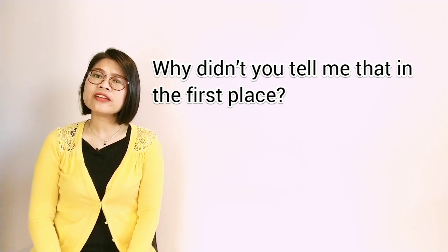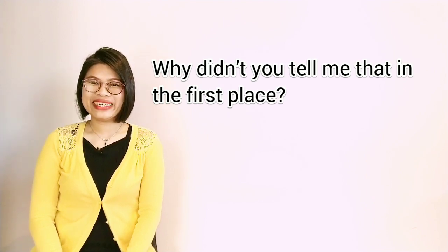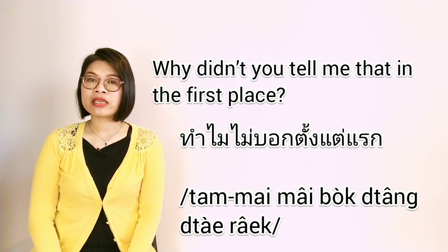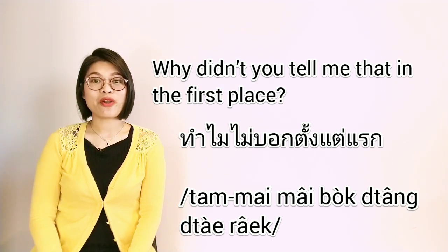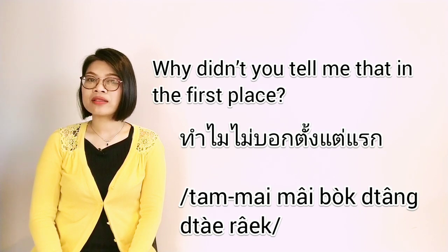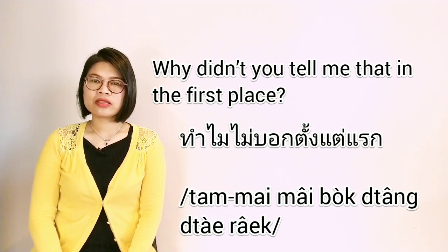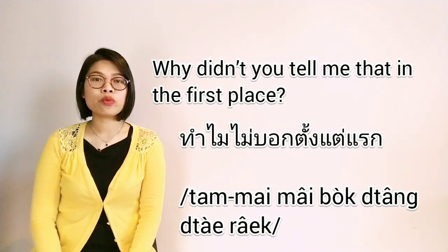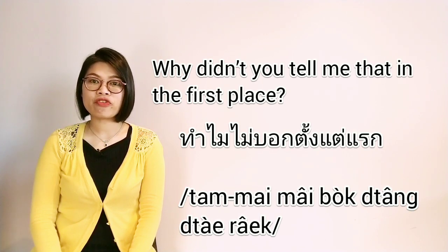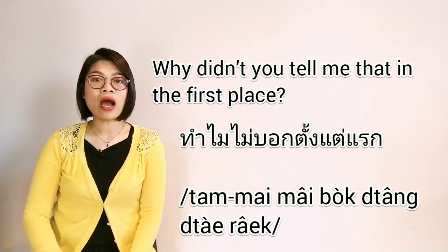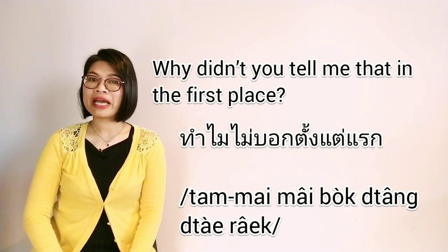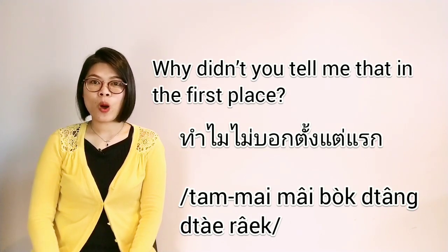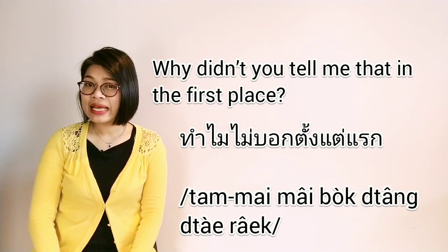The first example: 'Why didn't you tell me that in the first place?' In Thai we say ทำไมไม่บอกตั้งแต่แรก. So ทำไม is the question word 'why,' and ไม่บอก — the word บอก means 'to tell,' and putting ไม่ (negative) in front gives us 'didn't tell': ไม่บอก. So ทำไมไม่บอก, and then 'in the first place': ตั้งแต่แรก.